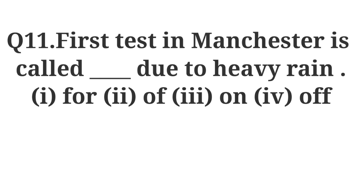Question number eleven: The first test in Manchester was called dash due to heavy rain. Options are: for, off, on, off. Here is the answer.